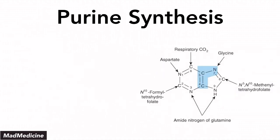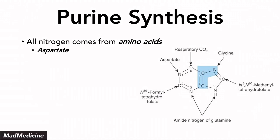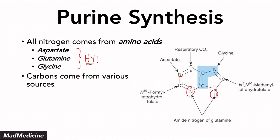All of the nitrogen in purines is going to be derived from amino acids. There are three main amino acids you need to be aware of: aspartate, glutamine, and glycine. The nitrogen at position one comes from aspartate, the nitrogen at position seven comes from glycine, and positions two and nine come from glutamine. If you have a deficiency in aspartate, glycine, or glutamine, you're not going to be able to synthesize purines.